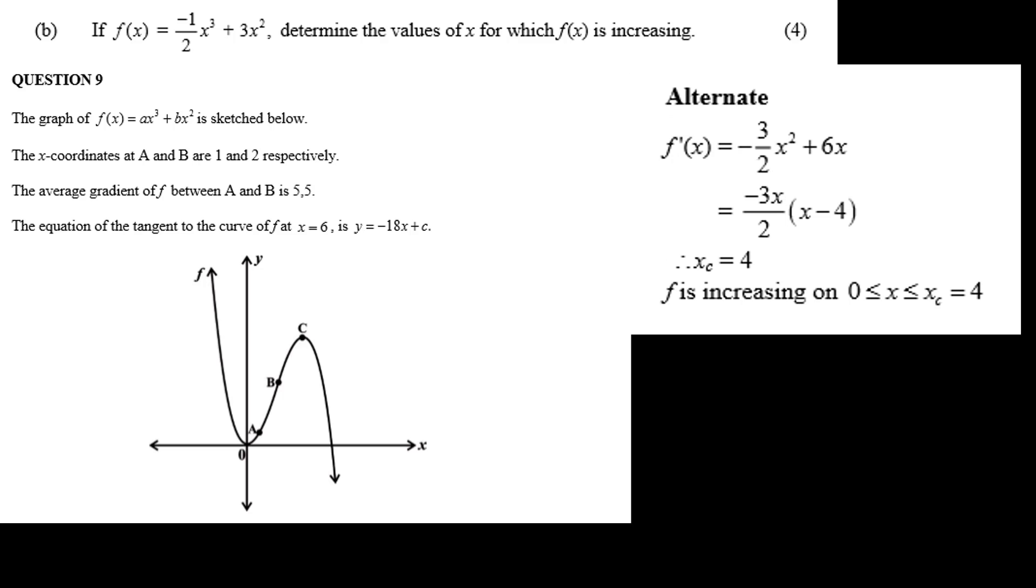Alternately, the derivative of f is equal to minus 3 over 2x squared plus 6x. Take out minus 3x over 2, and you get minus 3x over 2 into x minus 4, or x value of c equals 4.